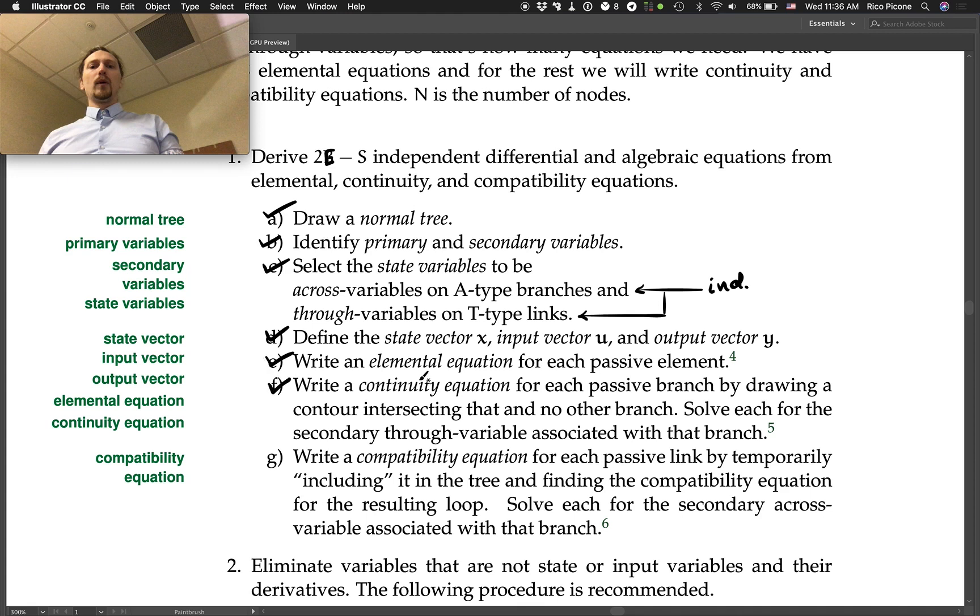Step f: Write a continuity equation for each passive branch by drawing a contour intersecting that and no other branch. Solve each for the secondary through-variable associated with that branch. This is how we're going to start using the contours with the continuity equation.